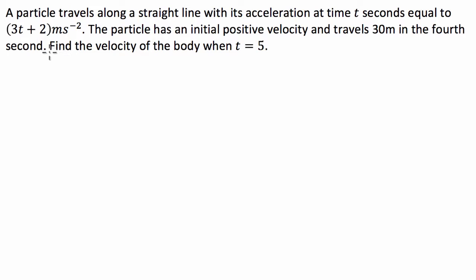So the question essentially is asking us to determine v of 5. Now, what we've been given is that a of t is equal to 3t plus 2. It says that the particle has an initial positive velocity and travels 30 meters in the fourth second. Well to start with, if we want to figure out what the velocity is from the acceleration, we are going to have to integrate the acceleration relationship.